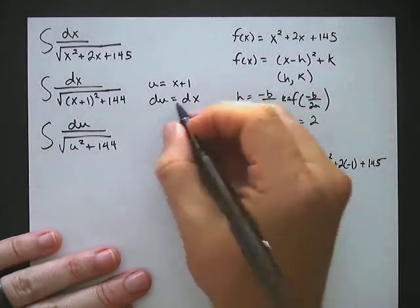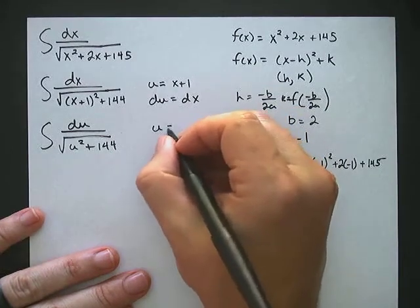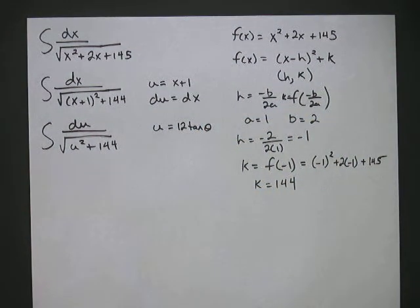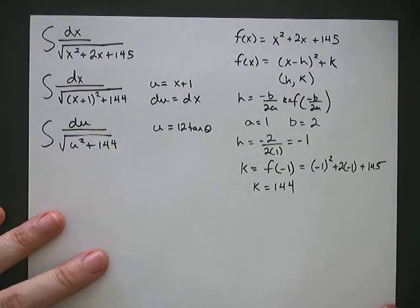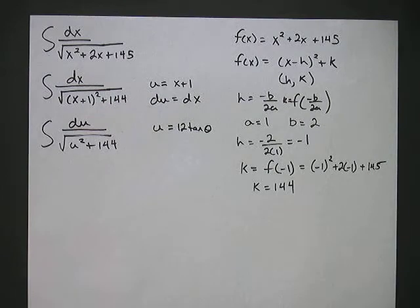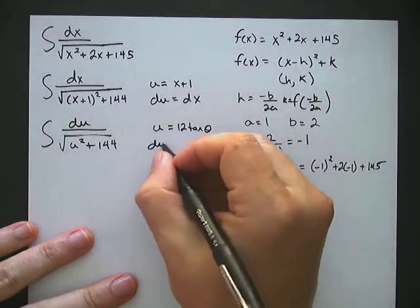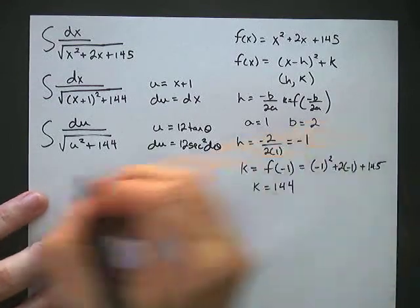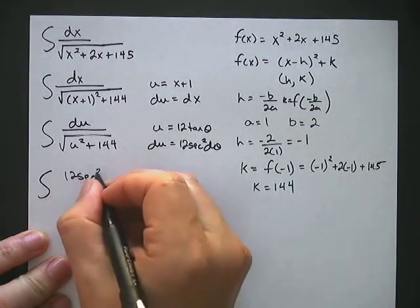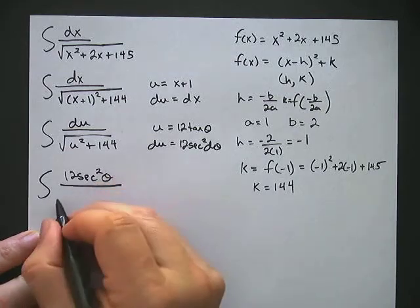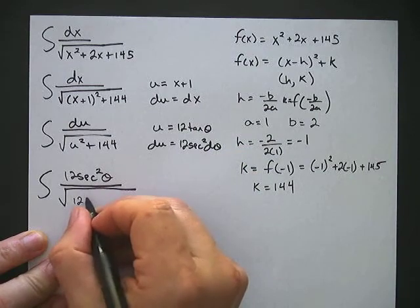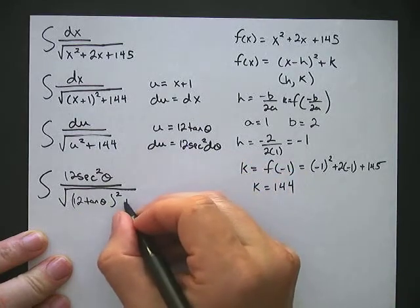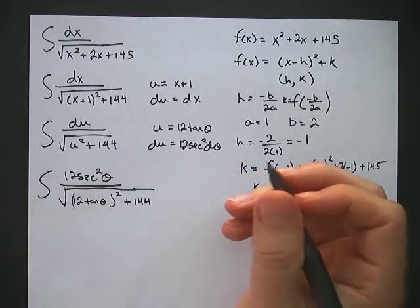Now we do a trig substitution using tangent. We say u is equal to 12 tangent theta — the 12 comes from 144 being 12 squared. You may recognize this as the x squared plus a squared form. So du equals 12 secant squared theta d theta. Substituting, we get 12 secant squared theta over the square root of 12 tangent theta squared plus 144, which is 12 squared, d theta.